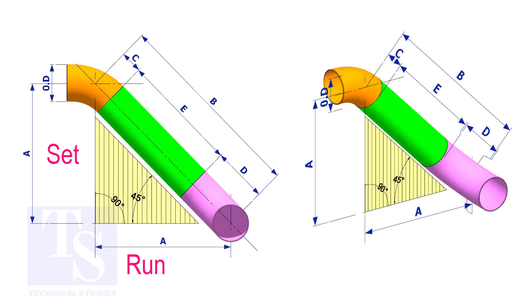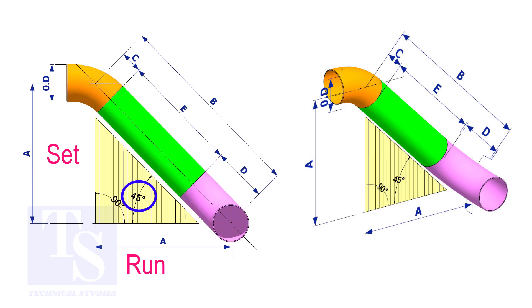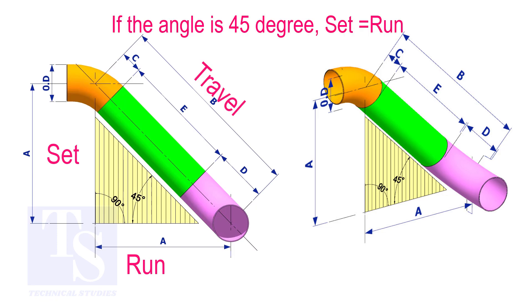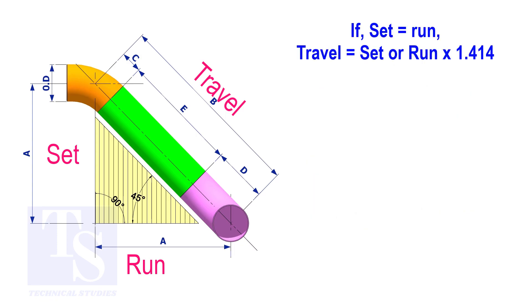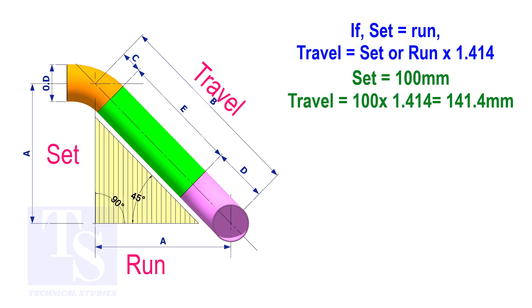In an offset, if the included angle is 45 degrees, the set and the run shall be the same. If the value of the set and the run are equal, the value of the travel is the set or the run multiplied by 1.414. Assume that the value of the set is 100. The value of the travel is 100 multiplied by 1.414, which equals 141.4.